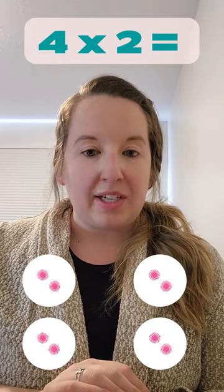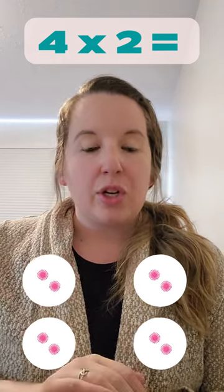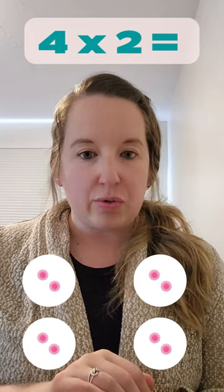The second number in the equation is 2, so that means we're going to have 2 items in each group.